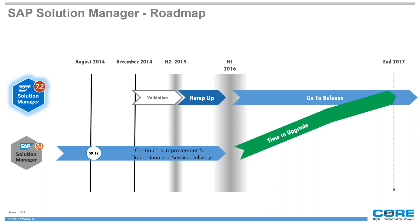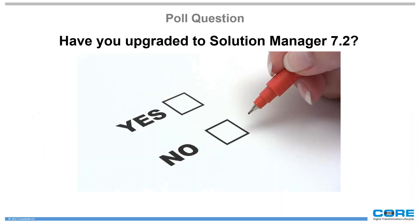If you haven't upgraded yet, here is the roadmap looking ahead. Solution Manager 7.1, specifically the Java stack — the 702 Java systems — standard support will end at the end of 2017. That will impact Solution Manager as a whole since it's a dual-stack system. Solution Manager 7.2 is the go-to version now. It's definitely time to start upgrading if you haven't already done so.